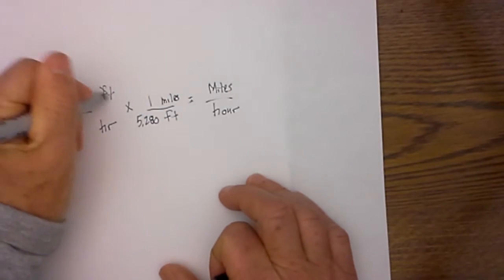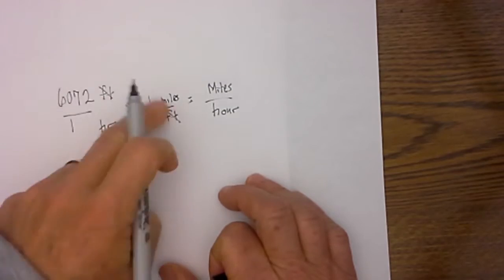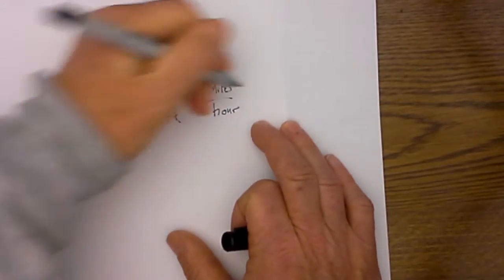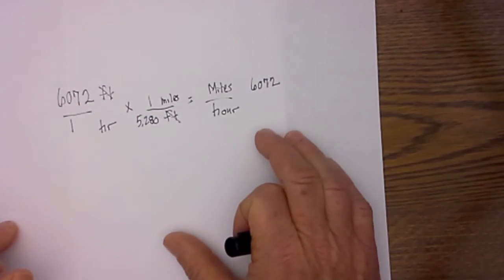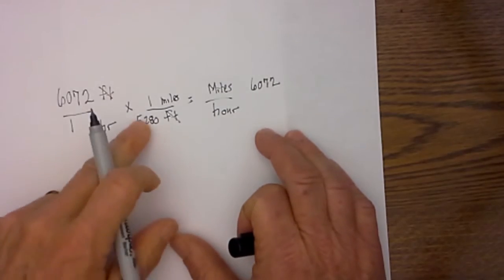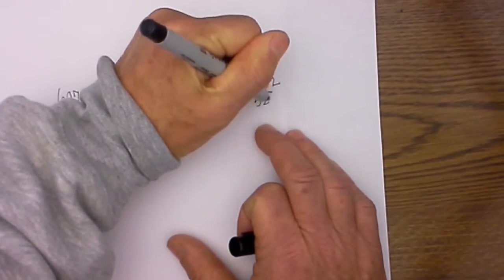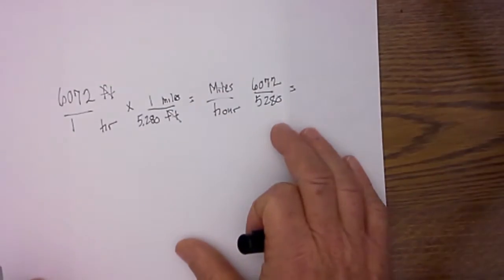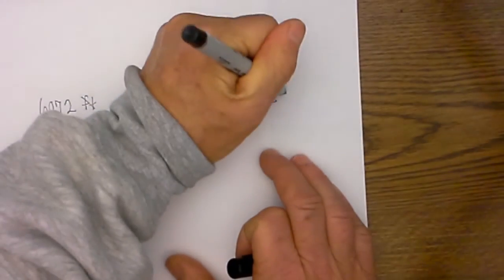Because the feet will cancel, I'm going to be left with miles an hour. And then I just multiply across, so 6072 times 1 is 6072, and then 5280.